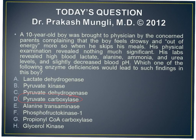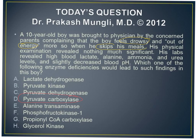The options are given from A to H — there are a variety of enzymes in the options, and we need to choose which enzyme could lead to all these signs and symptoms. The case is a 10-year-old boy who feels drowsy and out of energy, especially when he skips his meals. This happens specifically when he is in a fasting condition, which is indicative of hypoglycemia — his blood glucose levels are not being maintained properly.